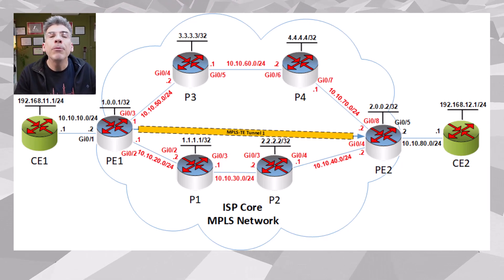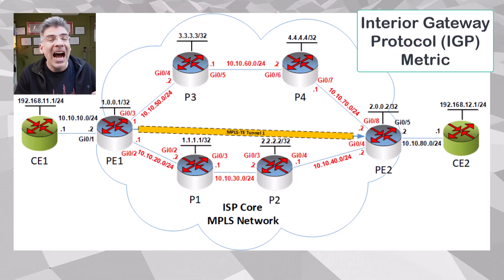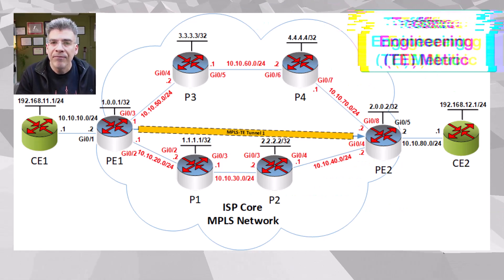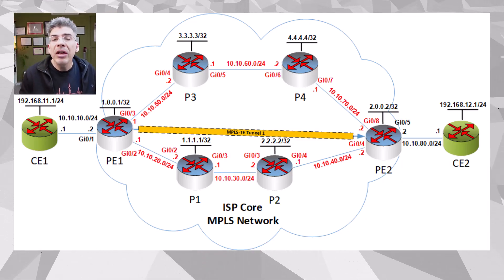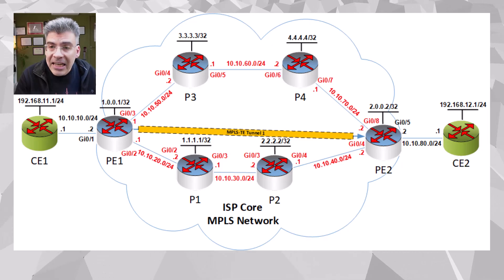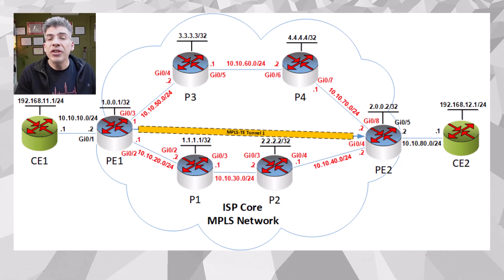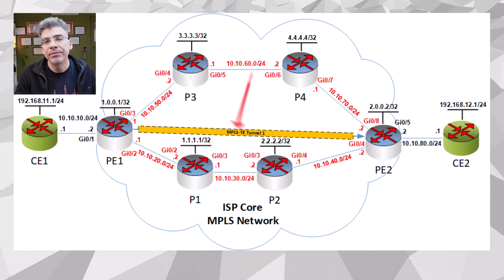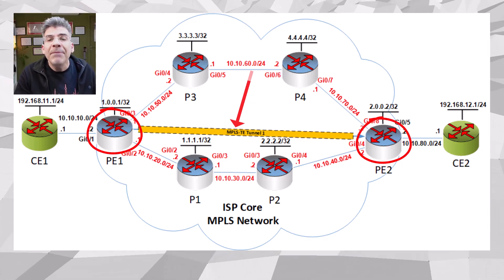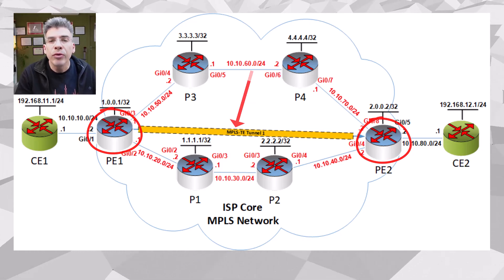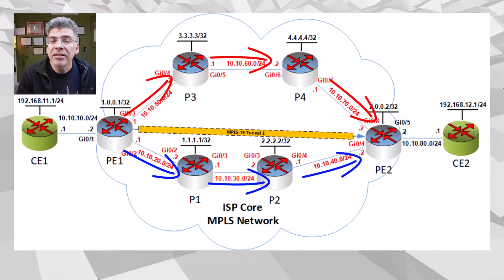In this video we'll take a look at two particular metrics used in this implementation: the IGP metric and the TE metric. Each of these metrics performs a different function, and understanding how they work in the context of MPLS TE is an important part of understanding this technology. To understand the role of each, take a look at this tunnel — although it is logically depicted to go from PE1 to PE2, it must physically travel through some of these routers. Will it go this way or that way, and what determines this?